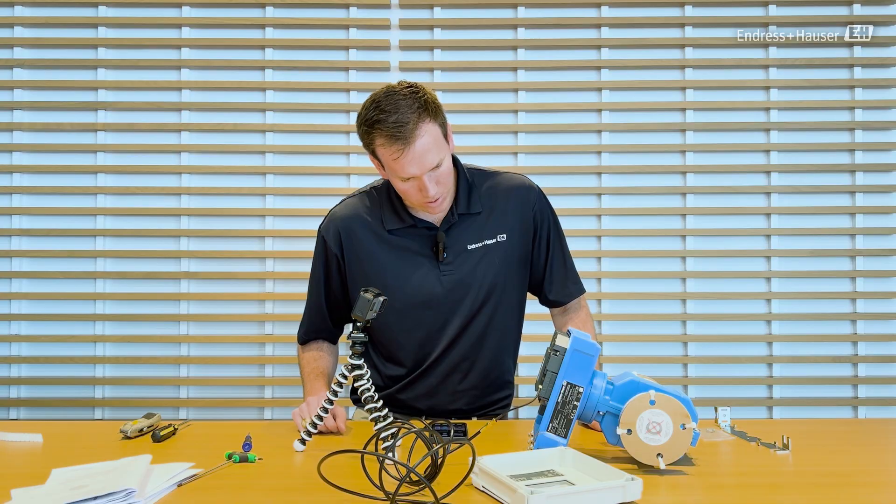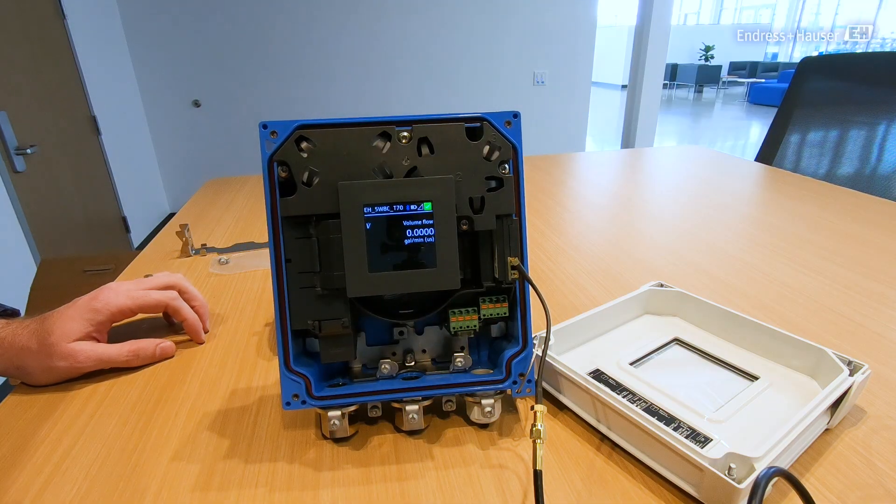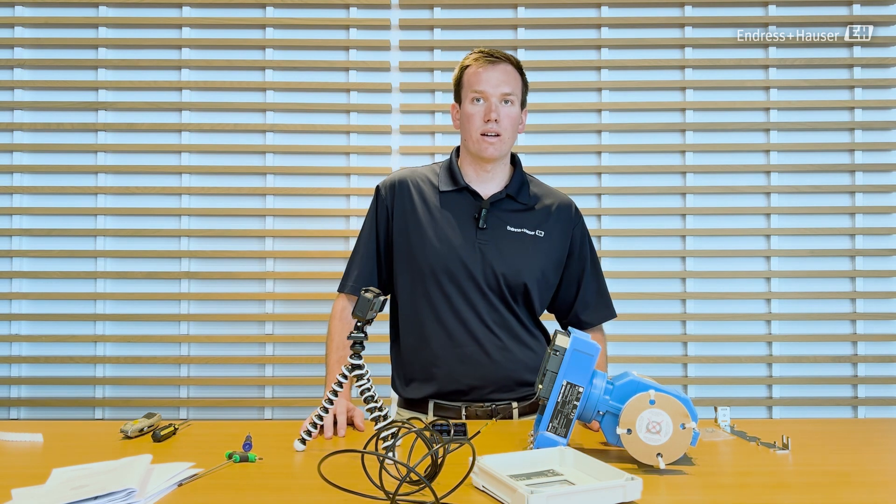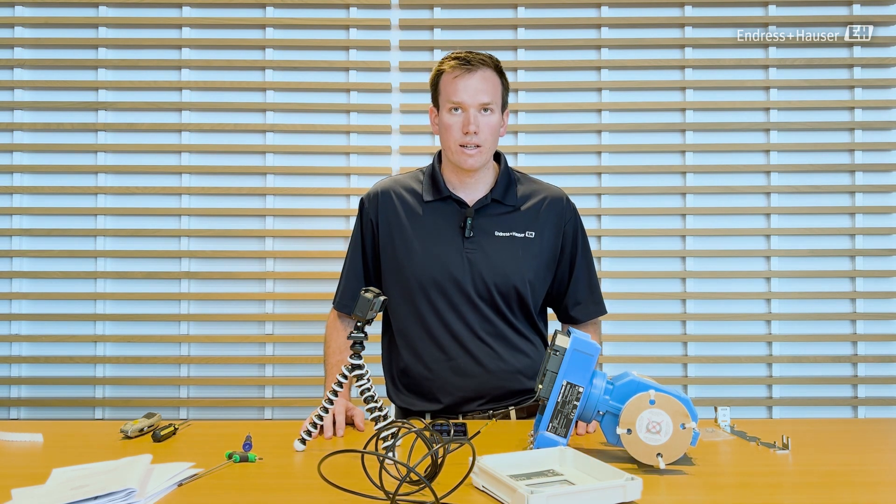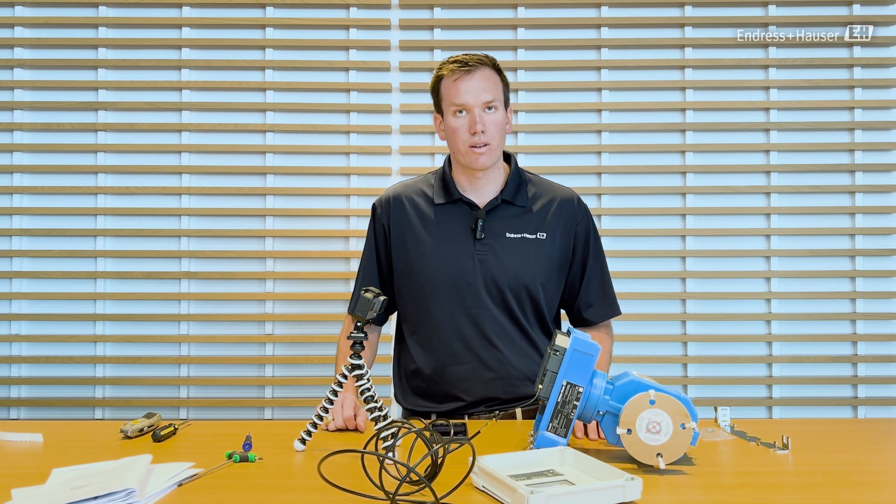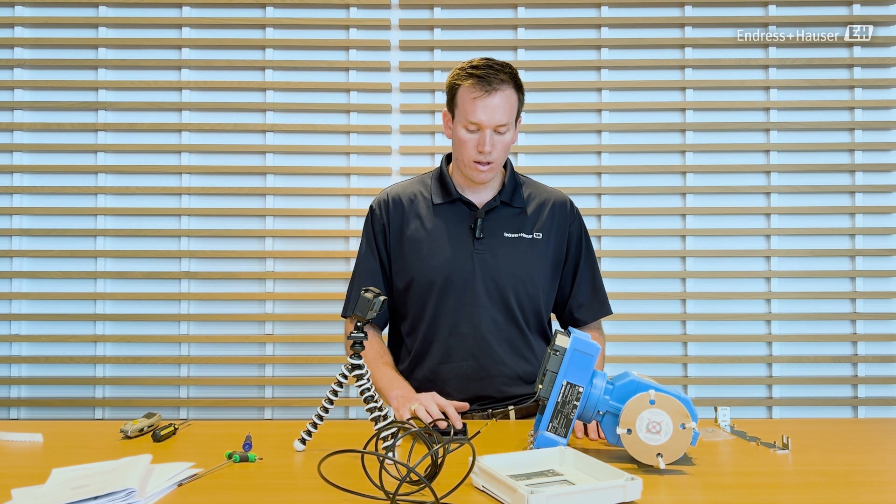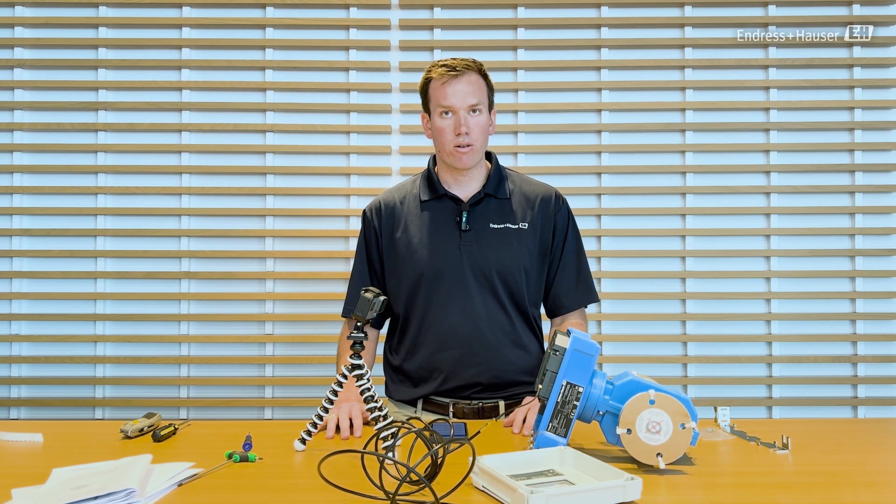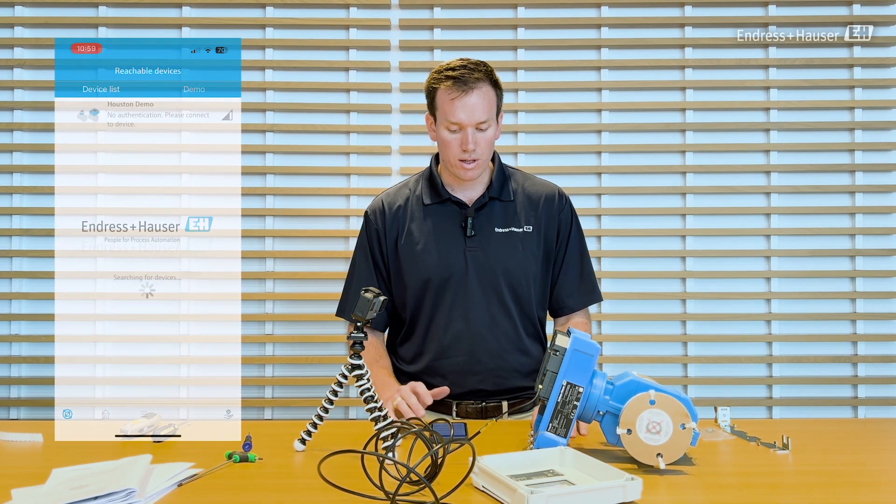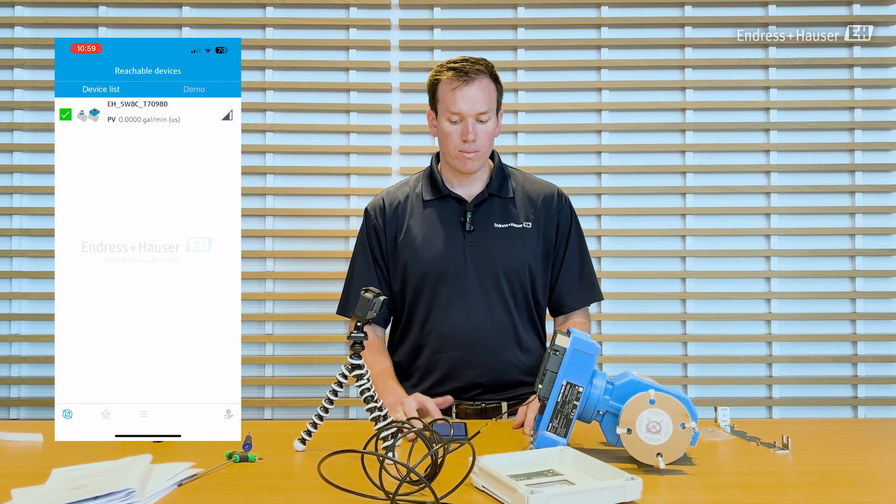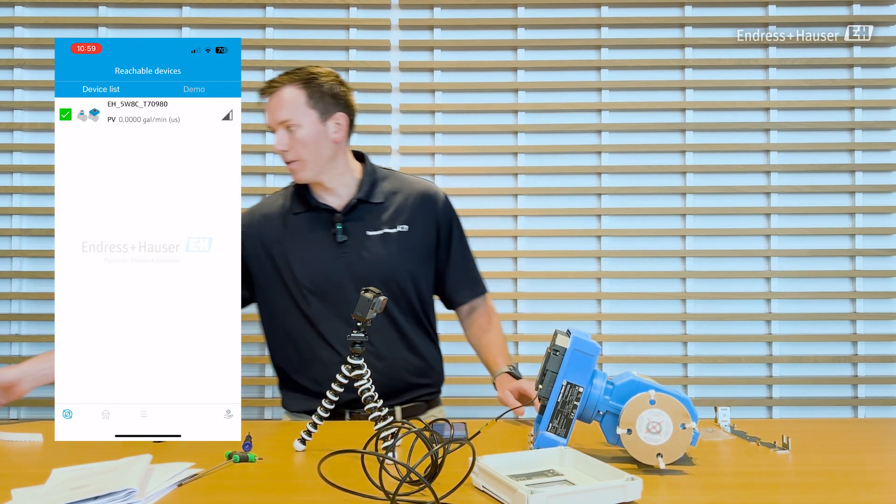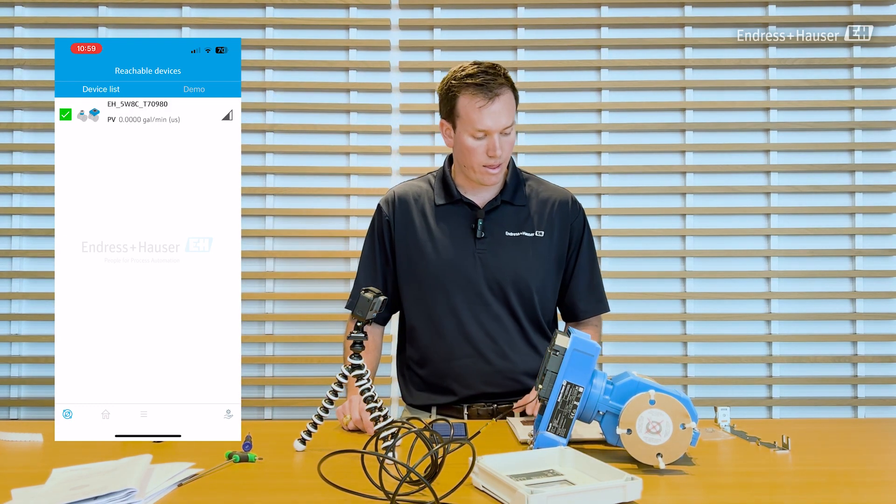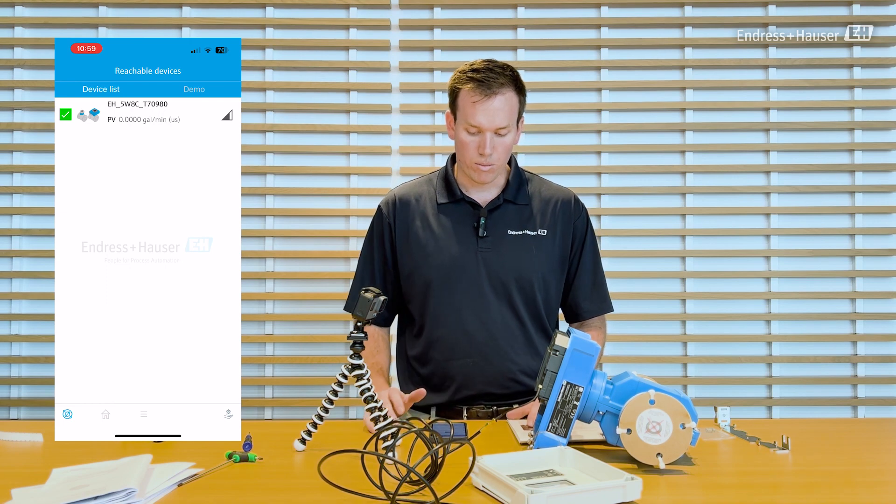The ProMag W800 has a touch to wake display. But all interaction with the meter is done using Bluetooth connectivity. So there is an app from Enderson Hauser called Enderson Hauser Smart Blue which is used to connect to this meter. And then when your meter is powered on you open the app. You should see that device show up, the last few digits of the serial number of the device. This one is T7098019000 will pop up.